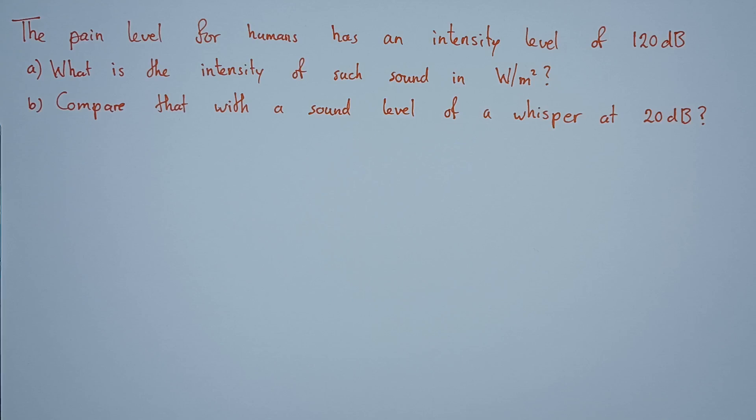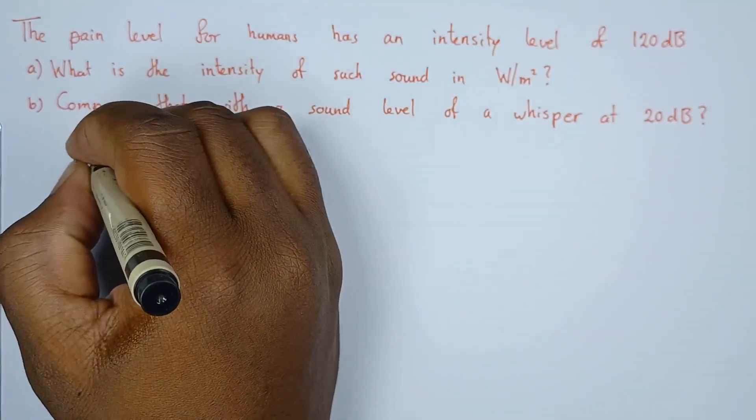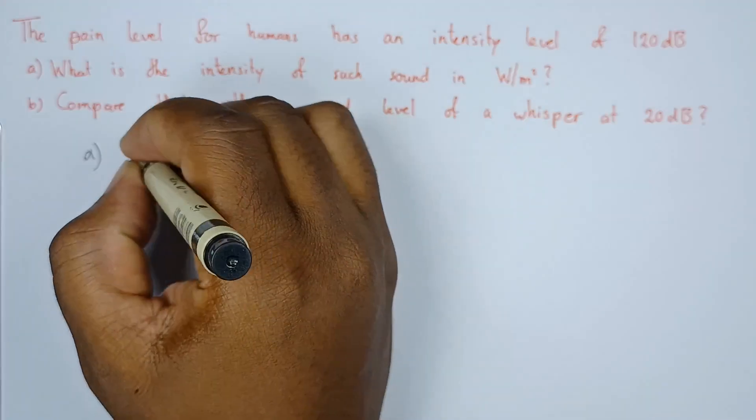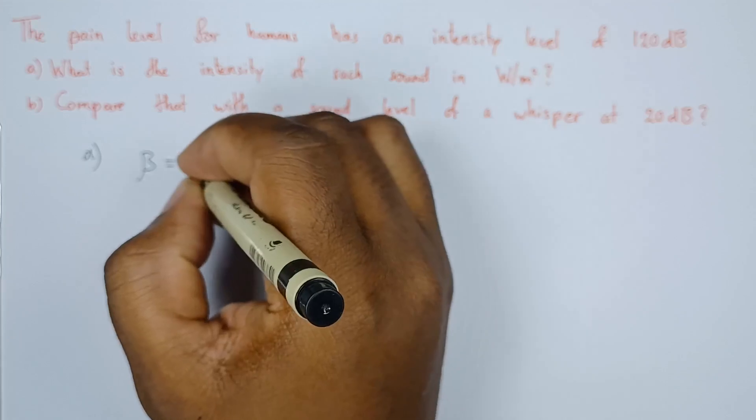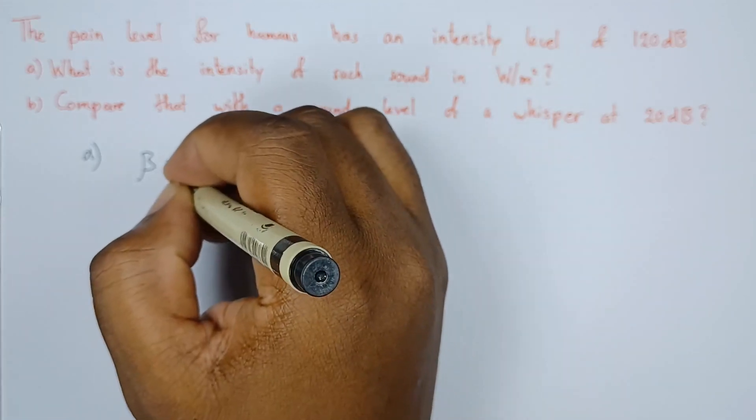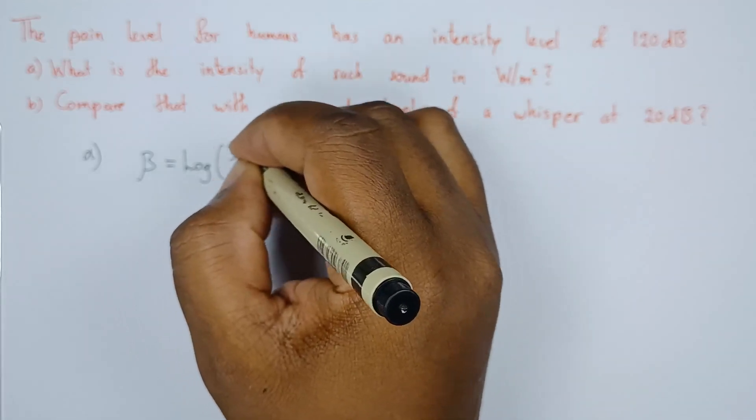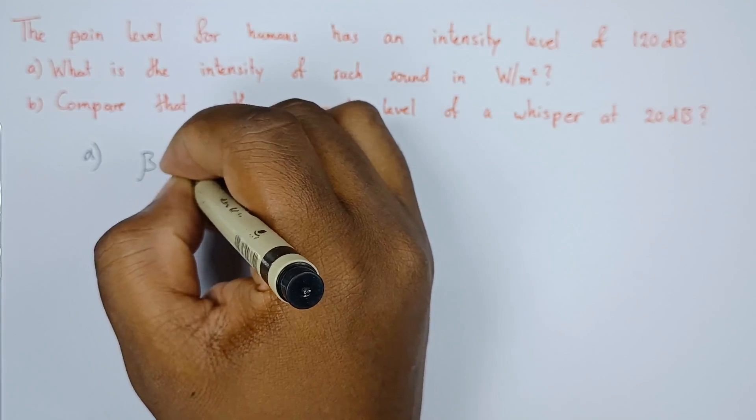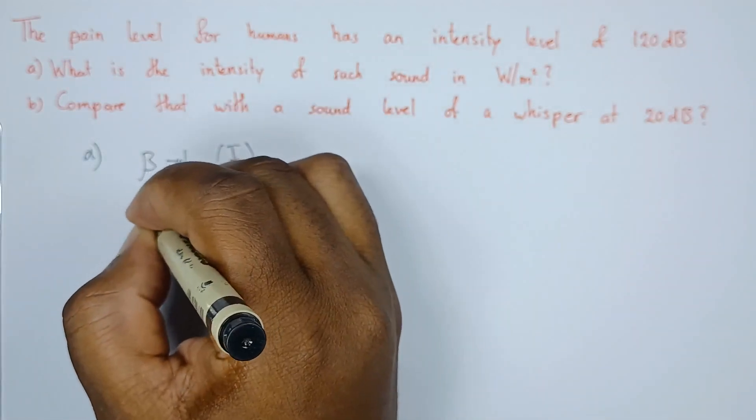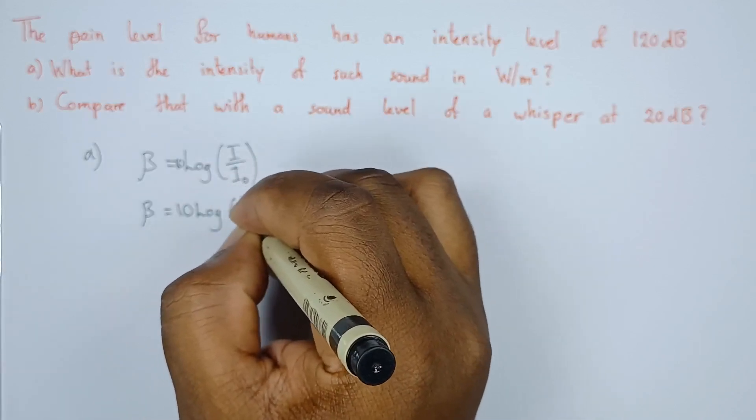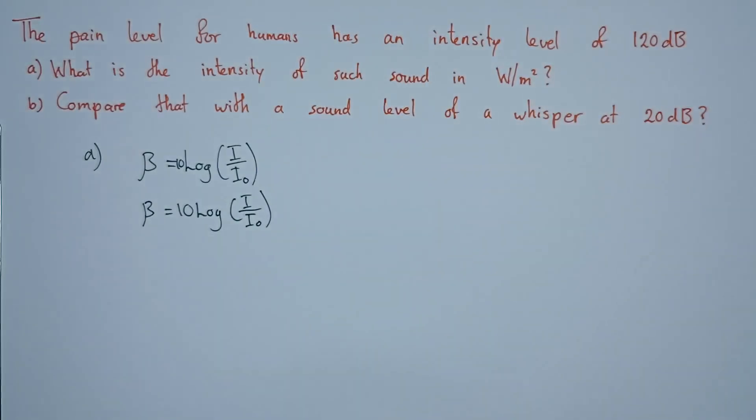It's important to note that the intensity level in decibels is given by the formula beta equals 10 logarithm of I over I naught, where I naught is a threshold of intensity.